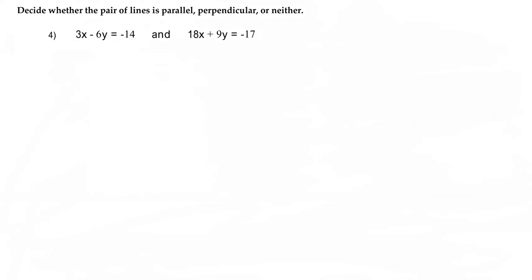Number four has directions to decide whether the pair of lines are parallel, perpendicular, or neither. What's going to tell us whether they are parallel, perpendicular, or neither is going to be their slope.